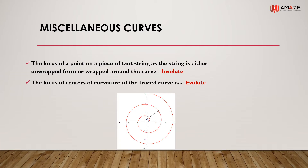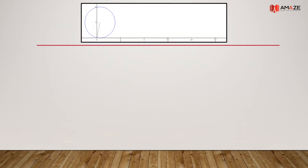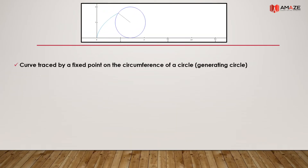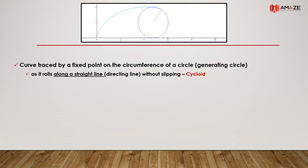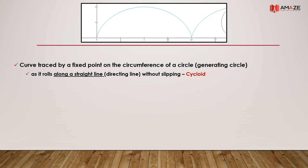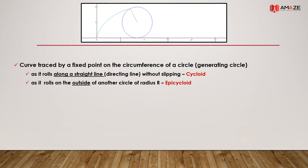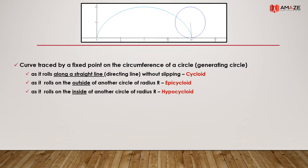The locus of the center of curvatures of a traced curve is called an evolute. A curve traced by a fixed point on the circumference of a circle as it rolls along a straight line without slipping is called a cycloid. If the circle rolls outside another circle, the curve traced is called an epicycloid. If the circle rolls inside another circle, the curve is called a hypocycloid.